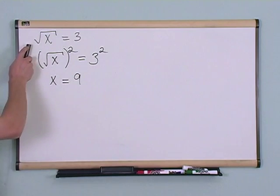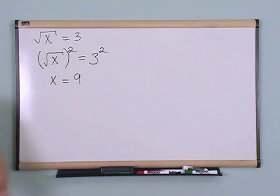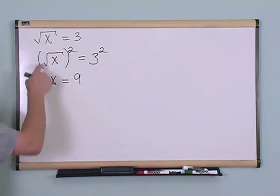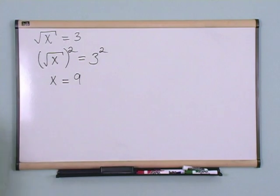So remember, the opposite of a square root is a square. If you want to get rid of a square root, all you have to do is square the whole thing like that. And if you can just remember that, then you'll be in good shape.